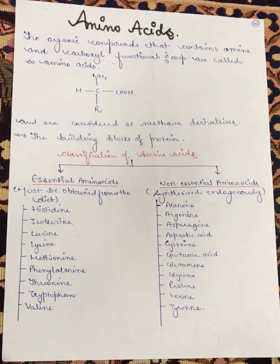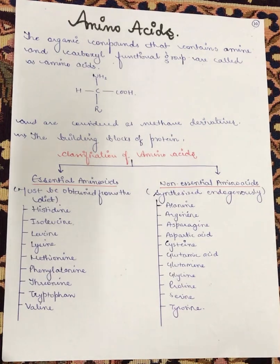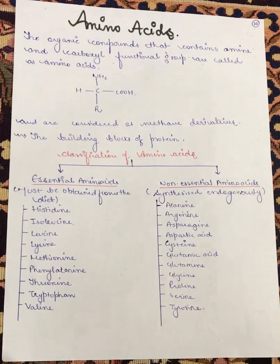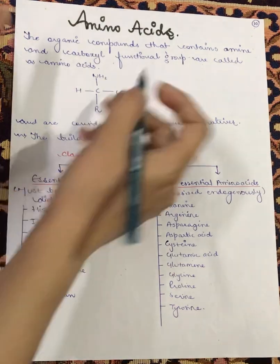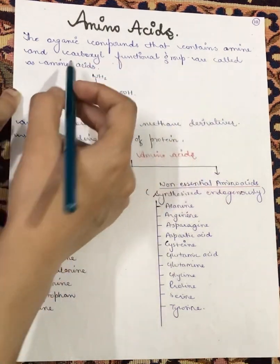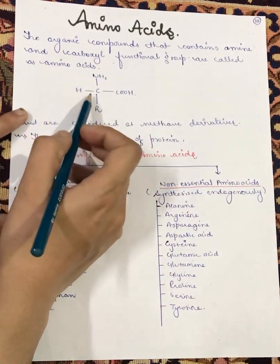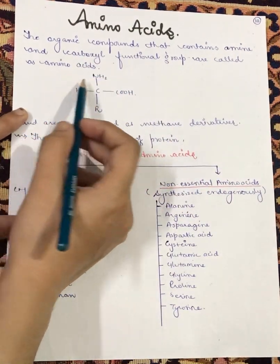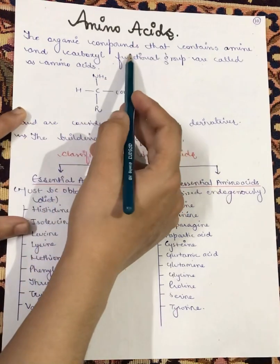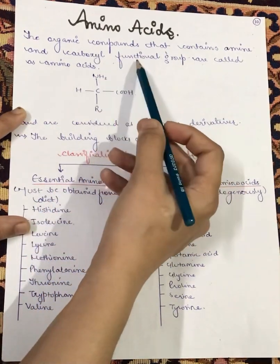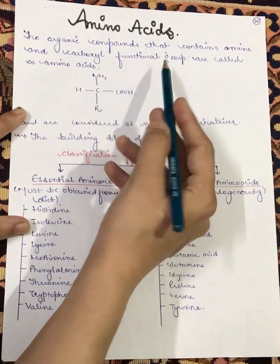The main function of amino acids is that these are the building blocks of proteins — meaning, proteins are made up of many amino acids. Amino acids are organic compounds which contain amine and carboxyl functional groups.